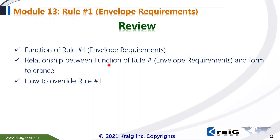Quick review of this module: we have learned what Rule No. 1 is. ASME default is Rule No. 1, but for ISO GPS the default is independency. We know there are two symbols — the circle I independency symbol and the circle E envelope requirement. We also know the relationship between Rule No. 1 and form tolerance, and the exceptions — how to override Rule No. 1. Thanks for watching. I will see you in the next module.